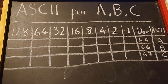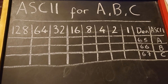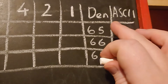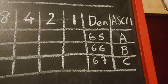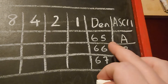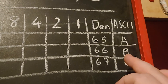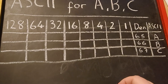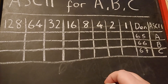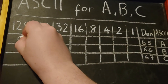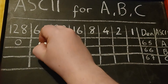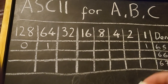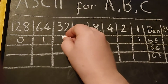Let's go through a worked example of ASCII for A, B, and C — the capital letters. We've got these codes from the character set and we're going to find the binary numbers. The first number is 65 for A. We know that 64 plus 1 gives us 65, so we place a 1 in the 64 column and a 1 in the 1 column, then fill the rest with 0s.